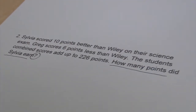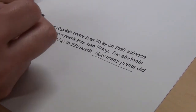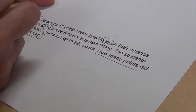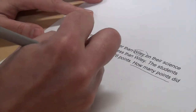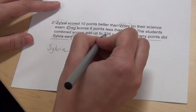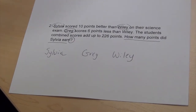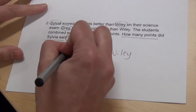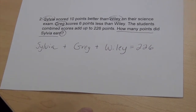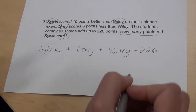I'm going to take note of that and try to organize the information. I noticed that I have three different scores to work with, so I'm going to set it up here: Sylvia, Greg, and Wiley. The students' combined scores add up to 226 points. I have two really important words that help me — "combined" and "add." So I know that when I take their scores and put them together, I have this total of 226 points. Now I need to take Sylvia, Greg, and Wiley and turn them into numbers somehow so I can figure out what their scores are.